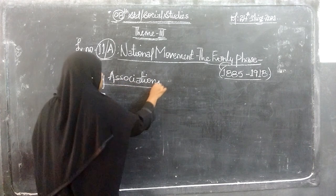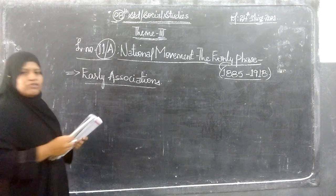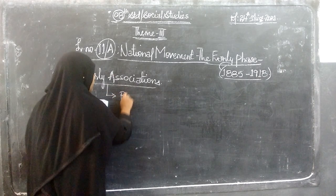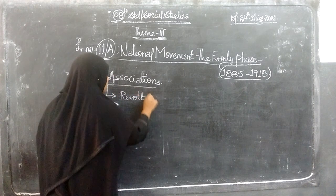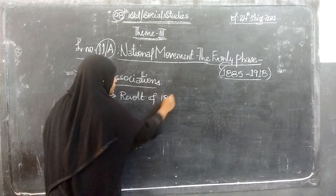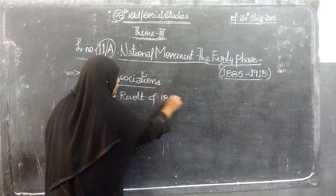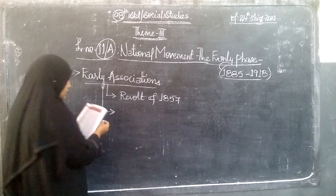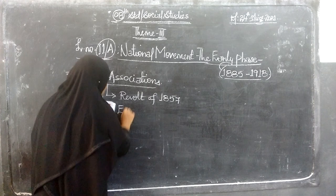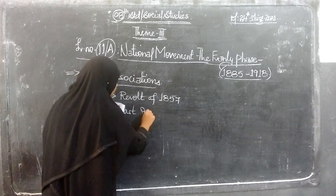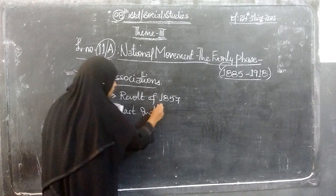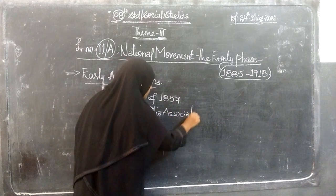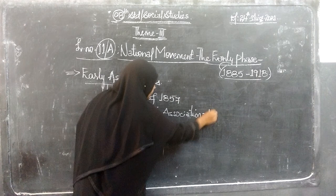Now we will look at what is called 'early associations' — early types of groups. In this regard, we have the Revolt of 1857, and then the East India Association formed in 1866.